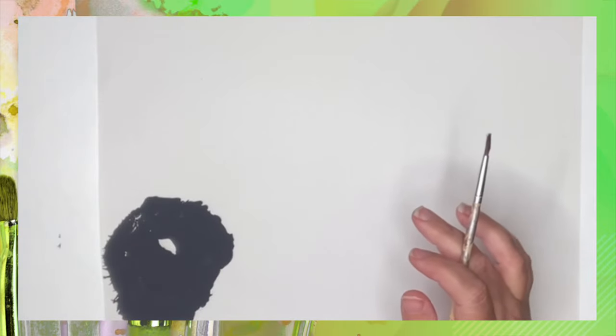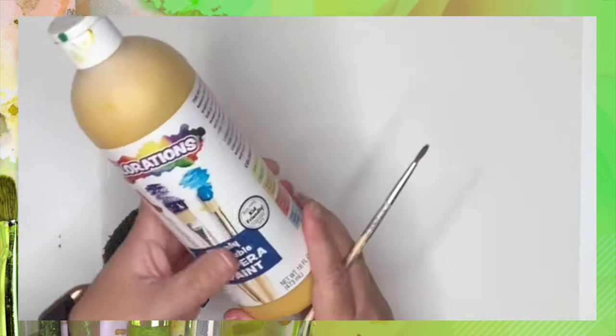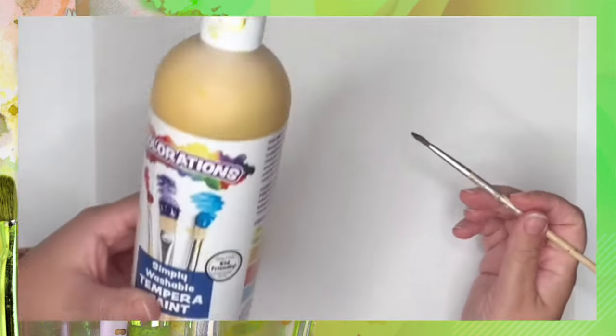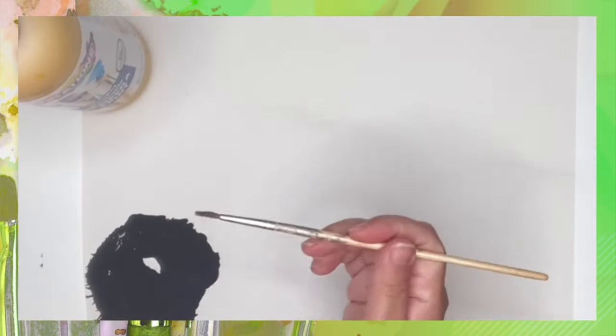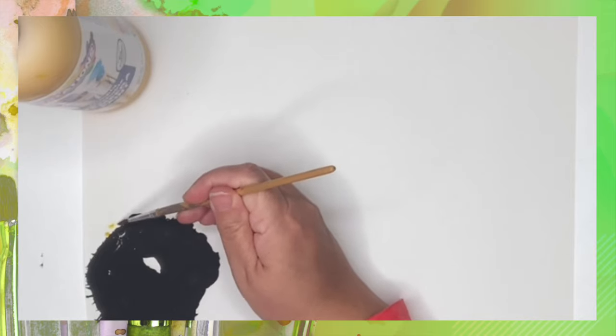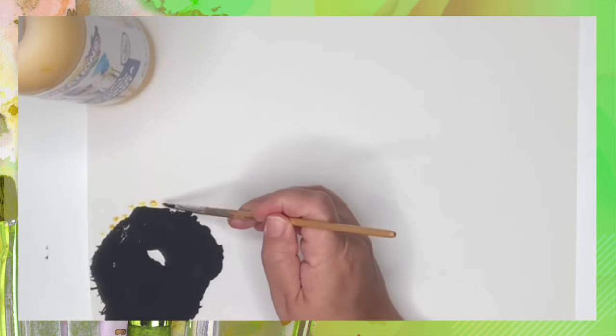So after we do our palm, we're going to do the gold. So we're going to grab the yellow paint and you're just going to do little dots right on top just like this.